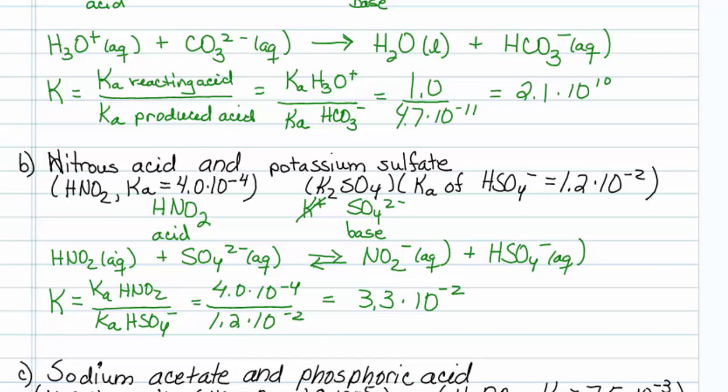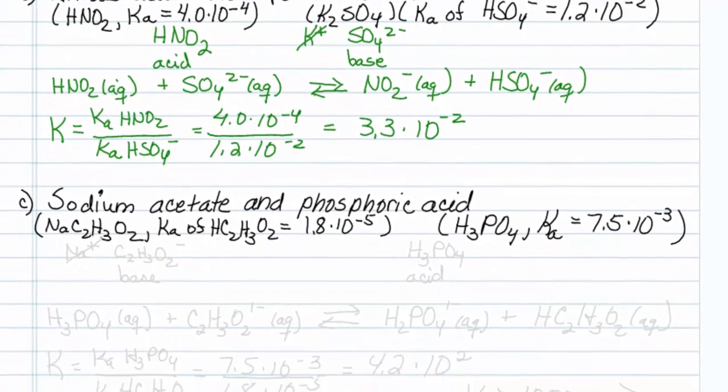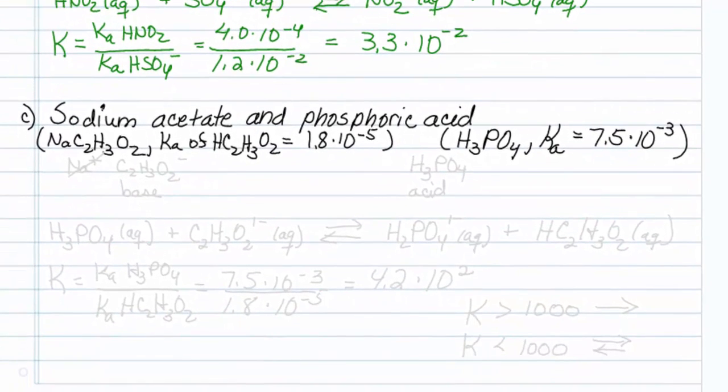Okay, the last one here is sodium acetate and phosphoric acid. So an aqueous solution of sodium acetate is going to contain Na plus and acetate ions, which have a 1 minus charge. Phosphoric acid is a weak acid, so an aqueous solution will contain H3PO4.